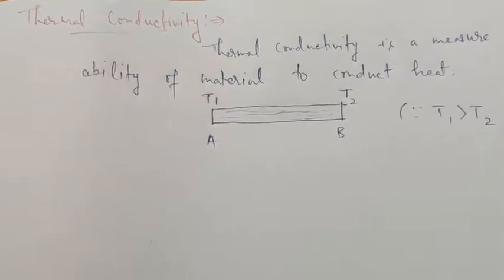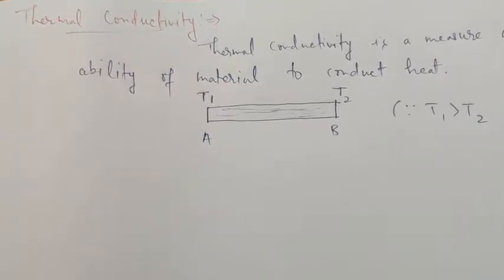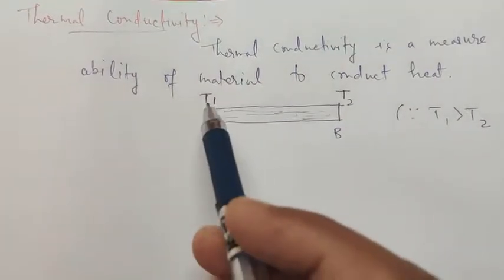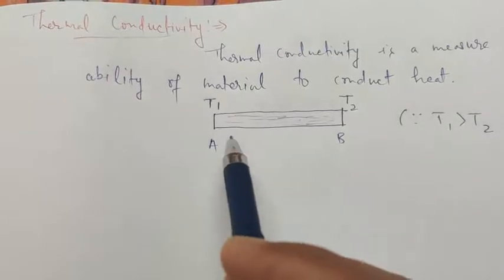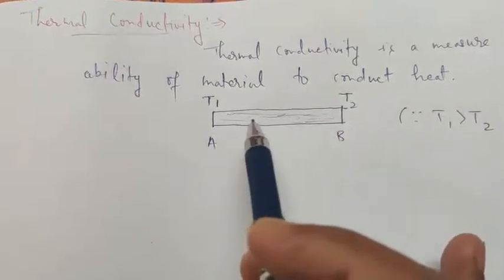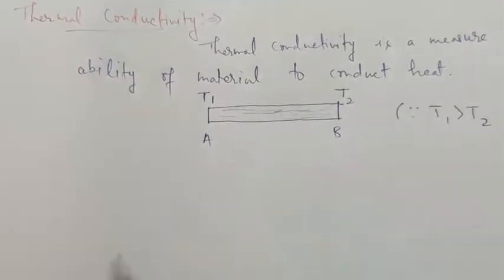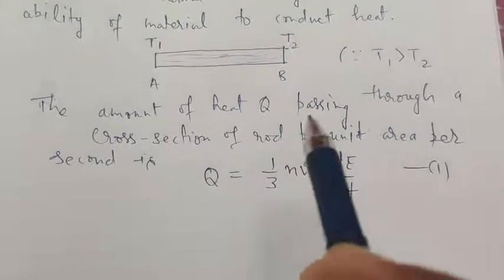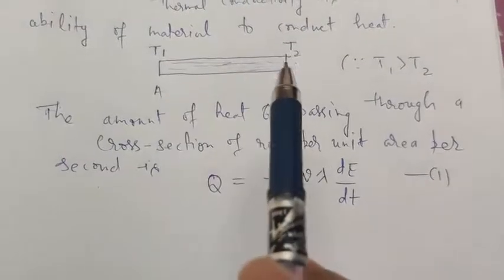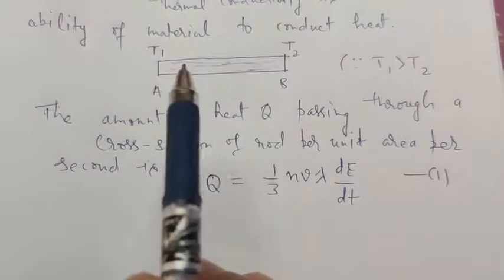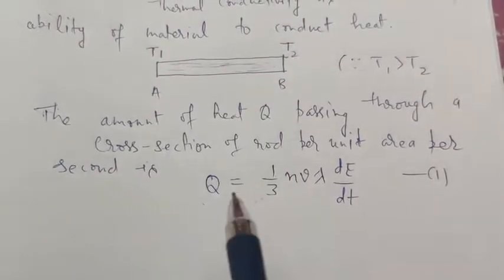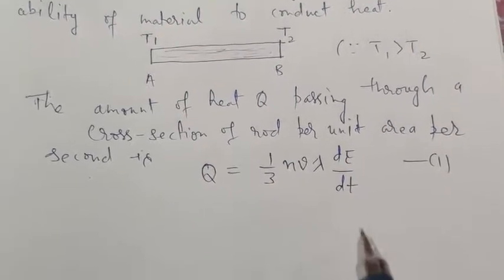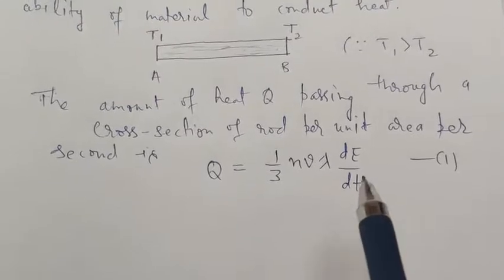Let us consider the amount of heat or energy Q passing through the cross-section of the rod per unit area per unit time. This is given by (1/3) N V λ times the rate of change of energy per unit time, where λ is the mean free path, V is the velocity of electrons, and N is the number density of free electrons.